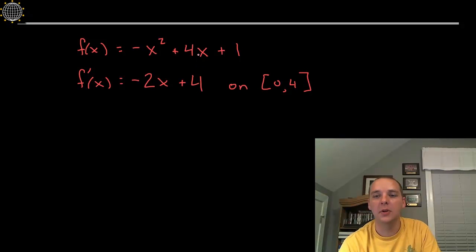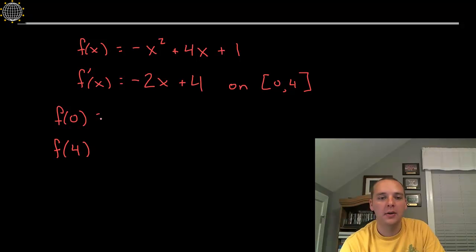Now it is continuous on the closed interval and differentiable on the open interval. The last thing we have to check is that f of 0 does in fact match f of 4. Now if these for some reason don't agree with one another, then Rolle's theorem is not applicable and there's nothing more to do. But let's check it here real quick. If you plug in 0 into the function, not the derivative but in the function, 0 squared is 0, 4 times 0 is 0, 0 plus 0 plus 1 is 1.